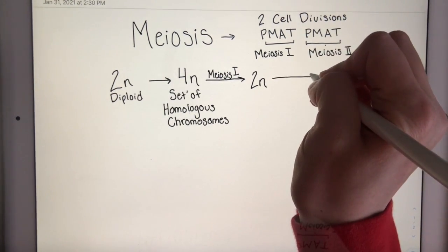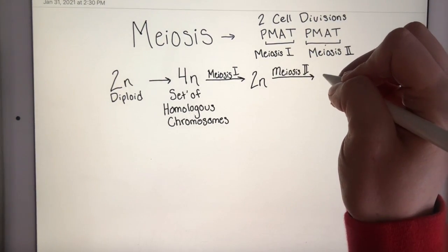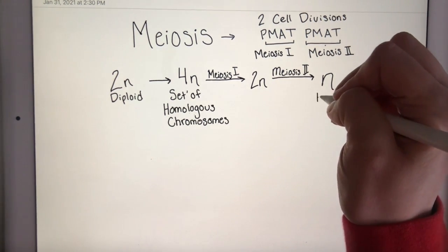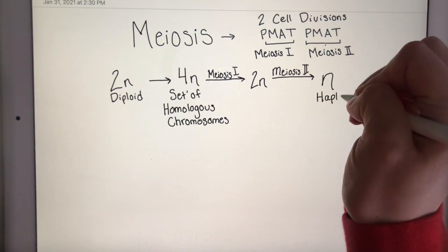And then we have meiosis II, which is going to leave us with N. Remember, 1N or N is haploid.